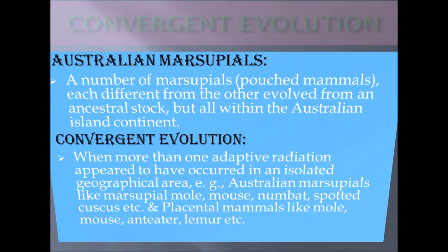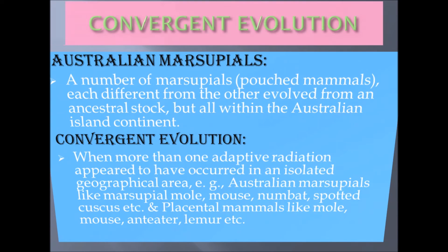Australian marsupials: a number of marsupial animals, i.e. pouch mammals, each different from the other, evolved from an ancestral stock, but all within the Australian island continent.